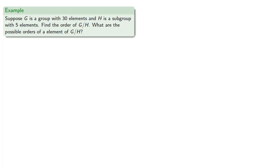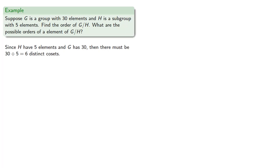For example, suppose G is a group with 30 elements and H is a subgroup with 5 elements. Let's find the order of G mod H and consider what the possible orders of an element of G mod H could be. Since H has 5 elements and G has 30, there must be 30 divided by 5, or 6 distinct cosets.